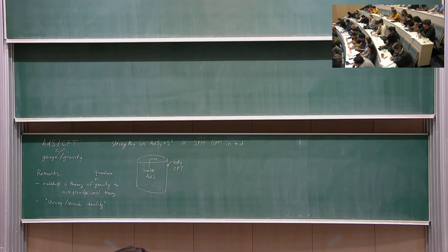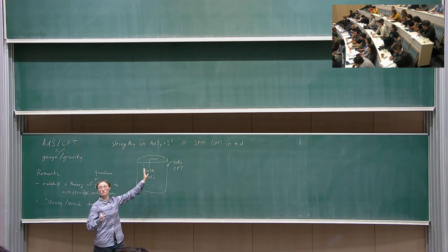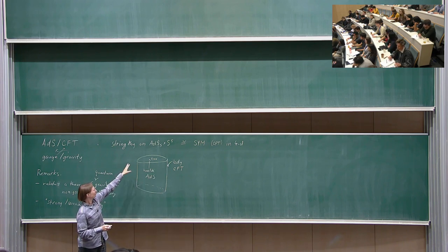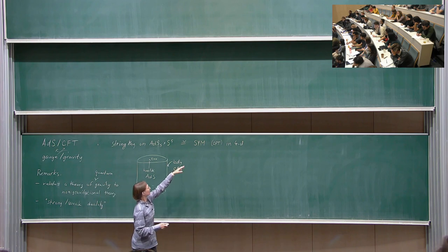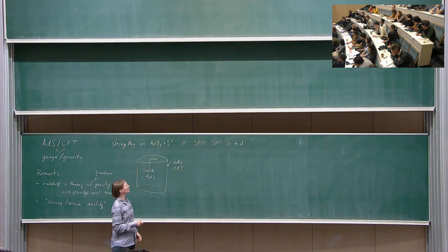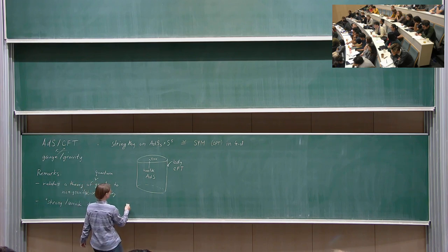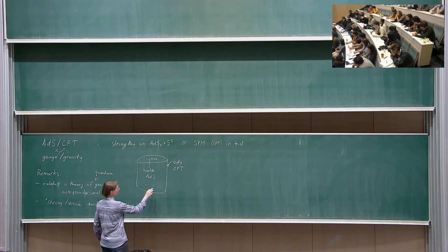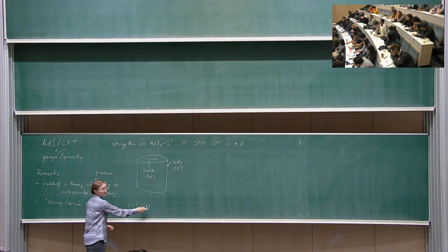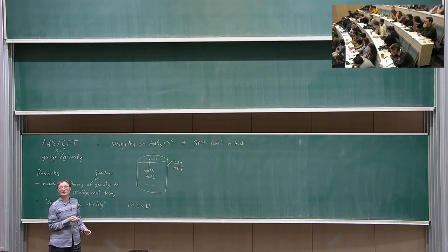What that refers to is that you have two parameters on each side: the ratio of the AdS scale to the string length and the string coupling, versus the rank of the gauge group and the 't Hooft coupling. Classical gravity is in the regime where the 't Hooft coupling is very large — so you're in a strongly coupled CFT — but to suppress quantum effects, the string coupling, which is the ratio of lambda to N, must be small. So for having the gravity side well behaved, you're in a regime where perturbative techniques on the CFT side are not applicable. That makes this program very challenging.